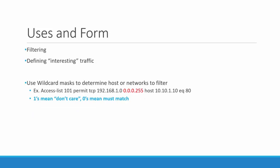There are multiple uses for an access control list. I narrow it down to two major uses, which would be filtering and defining interesting traffic. Filtering is what we're going to focus on today. So after I go through how they operate and their function, we're just going to go through filtering.